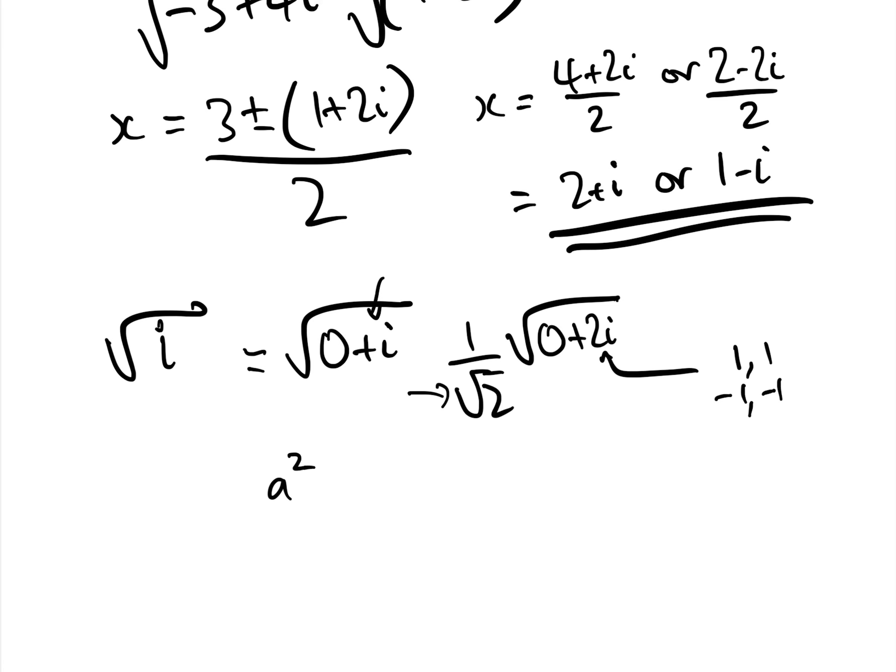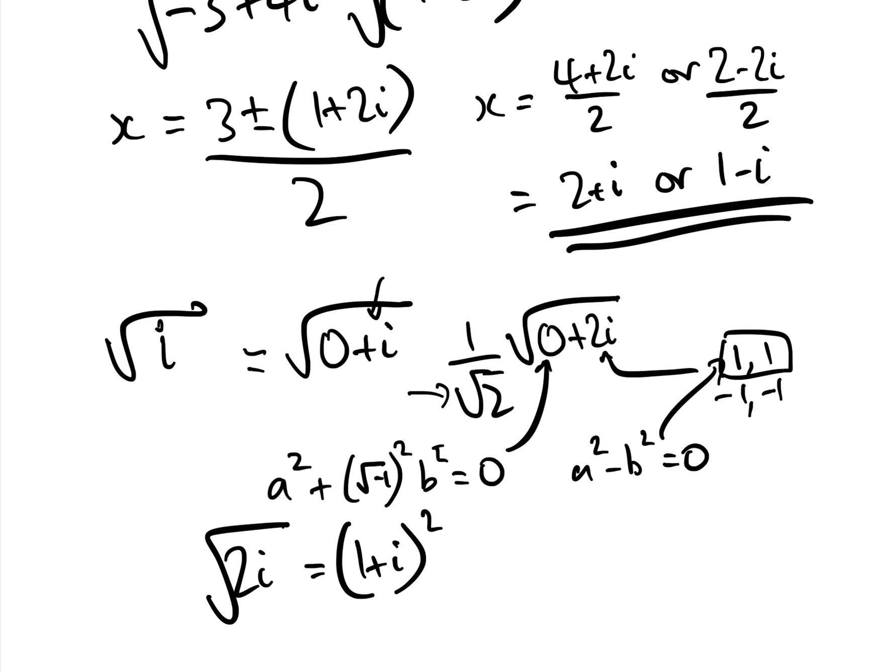And so we need to find a and b such that a squared add root minus 1 squared b squared equals 0. In this case, i.e., a squared minus b squared equals 0. Well, obviously, 1 and 1 satisfy that. So therefore, we know that 2i can be written as 1 plus i squared. And so therefore, the square root of 2i is the square root of 1 plus i squared, which is 1 plus i.